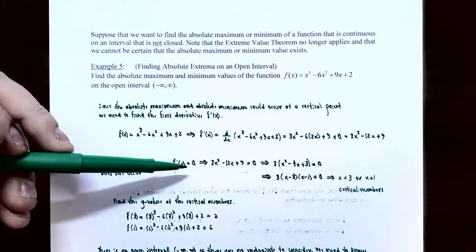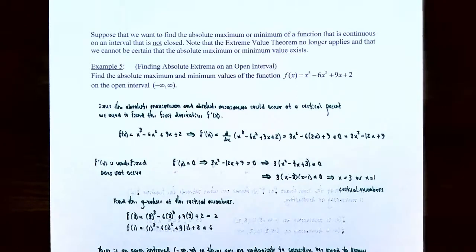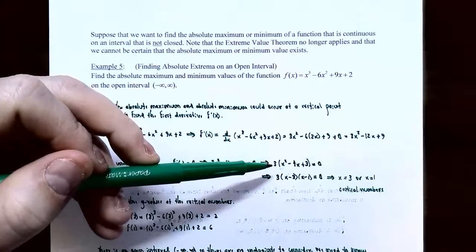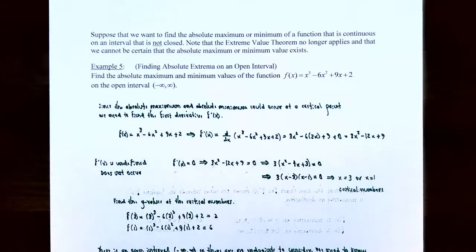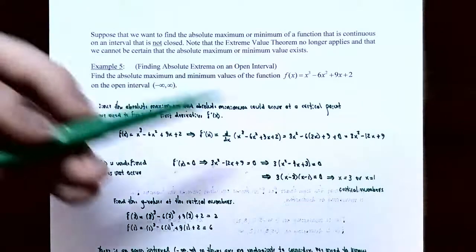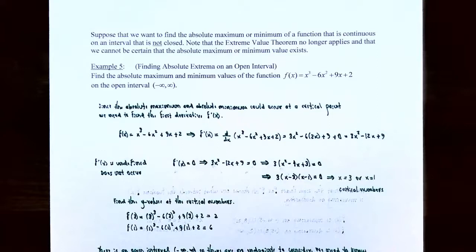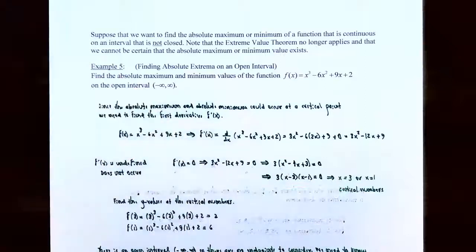Setting f'(x) = 0: 3x² − 12x + 9 = 0. All three terms have a factor of 3, so factoring out the GCF gives 3(x² − 4x + 3) = 0. Factoring the trinomial — two numbers that multiply to 3 and add to −4 are −3 and −1 — gives 3(x − 3)(x − 1) = 0. So x − 3 = 0 gives x = 3, and x − 1 = 0 gives x = 1. We have two critical numbers: x = 3 and x = 1.